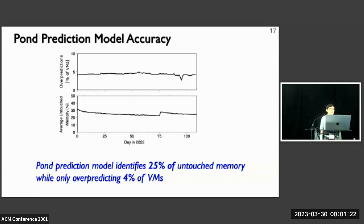For prediction model accuracy, we deployed our model in production for a few months and tried to monitor the required DRAM needs and the mispredictions. It turns out that Pond prediction models can identify 25% of the untouched memory while only over-predicting 4% of the VMs.